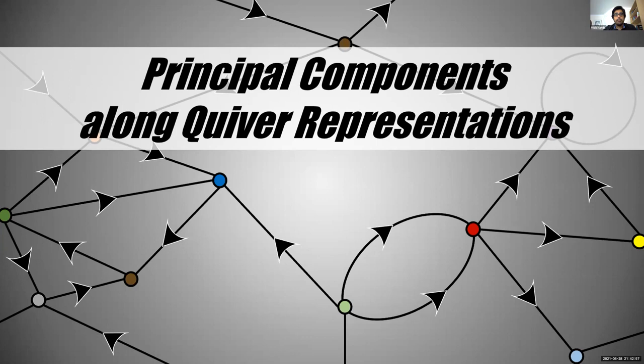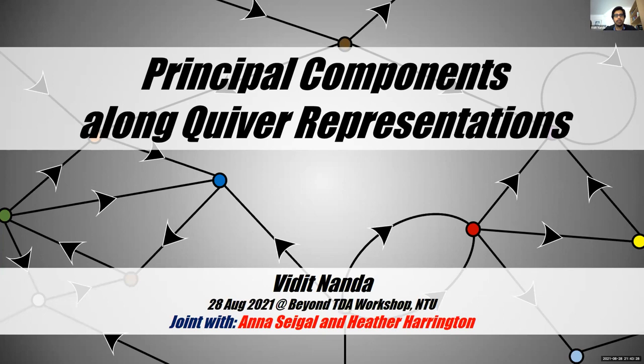One other matter: I had Professor Yos's book on Riemannian geometry sitting on my bookshelf for many months, and then I stupidly took it to my office, so I cannot show off my copy today, which I'm very sad about. With that out of the way, let's get the talk started. This is work on principal components along quiver representations — I will explain all those words. This is joint work with Anna Siegel and Heather Harrington. The three of us work on the fourth floor of the Andrew Wilds building at Oxford on completely different things, so it was very fun to collaborate for a few months.